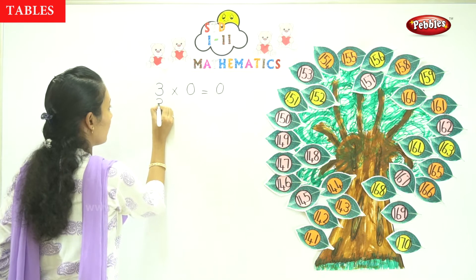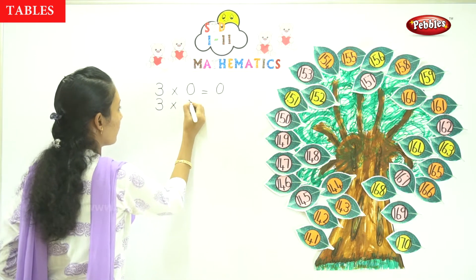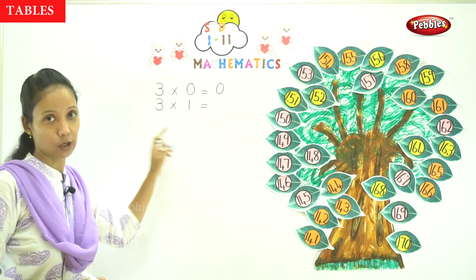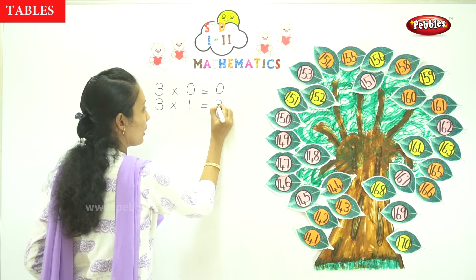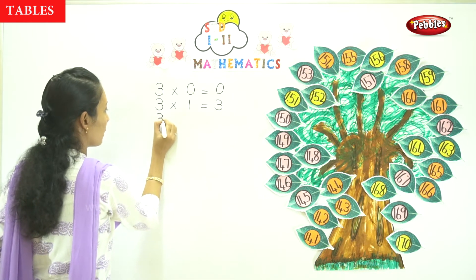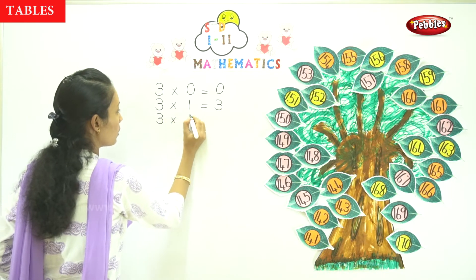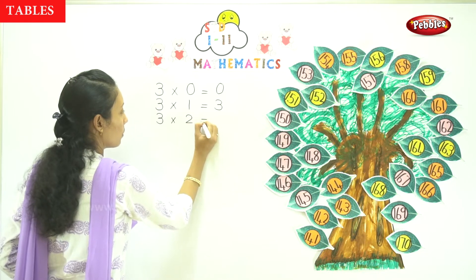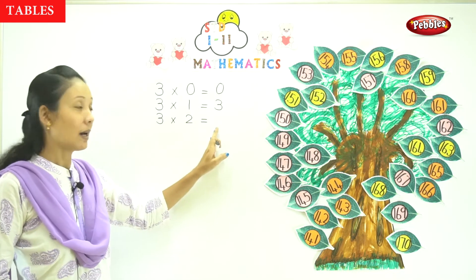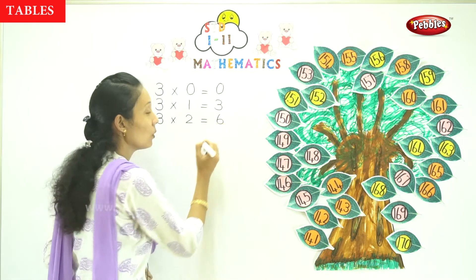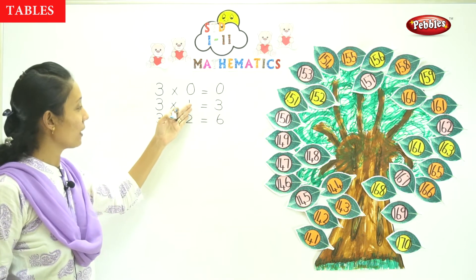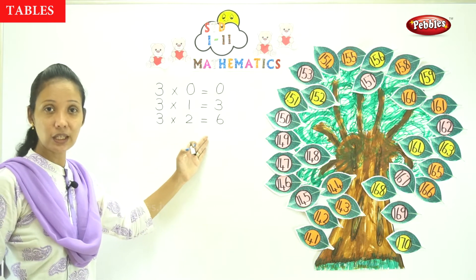3 into 1. That is 3 into 1 — what is the answer? Is it 3? Yes. Now next one: 3 into 2. What is the answer? So you have 3 into 2 is equal to 6. Yes. So 3 into 0 is equal to 0, 3 into 1 is equal to 3, 3 into 2 is equal to 6.